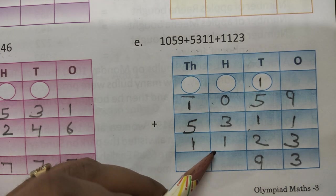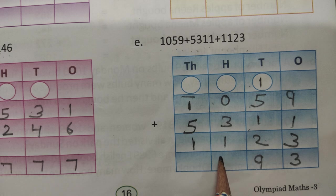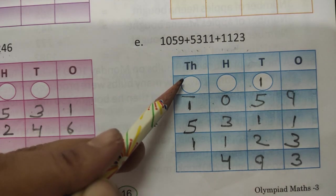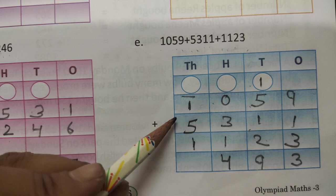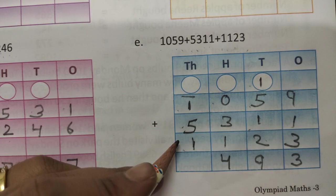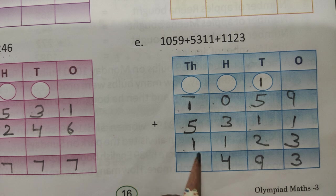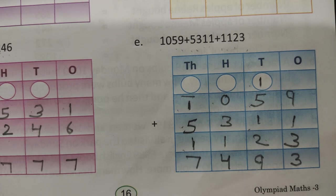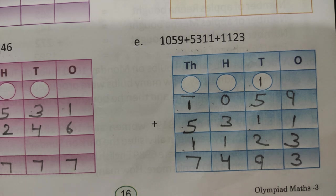And this add this number: 0 plus 3 plus 1. So 4 is right now. And 1000 place add this 1, 1, 5 and 1. 1 plus 5 is 6, 6 plus 1 is 7. So answer is 7493. Is that clear of all of you?